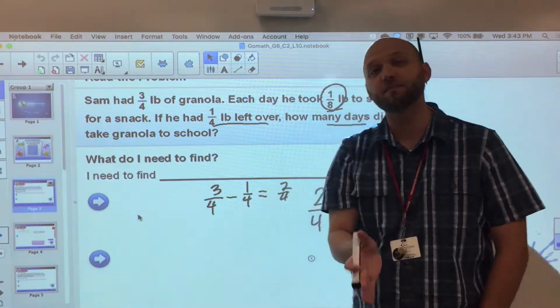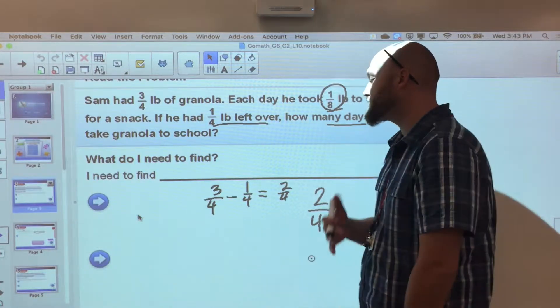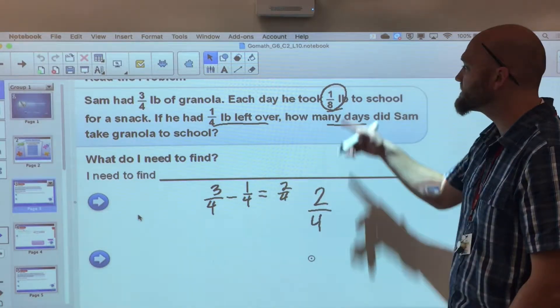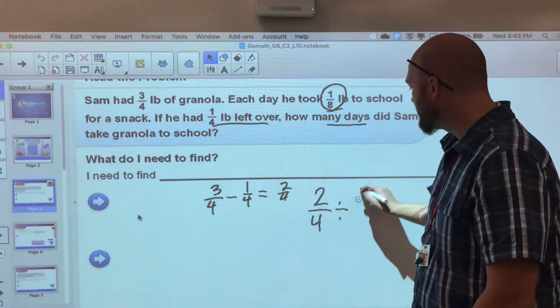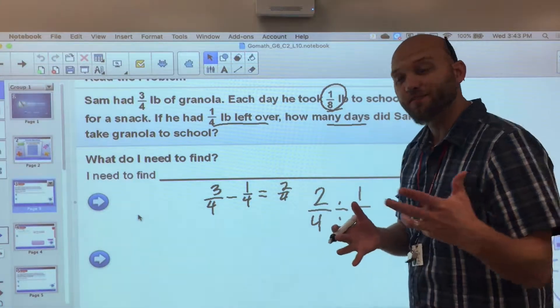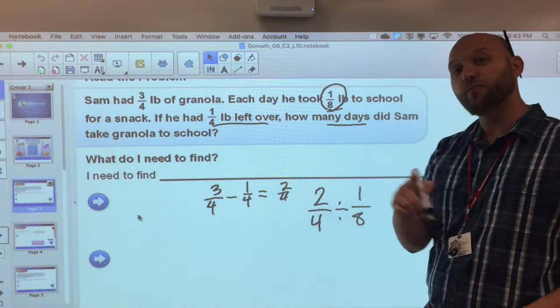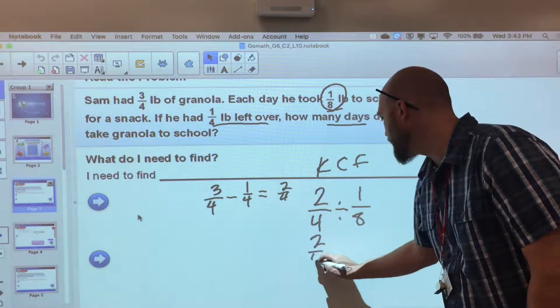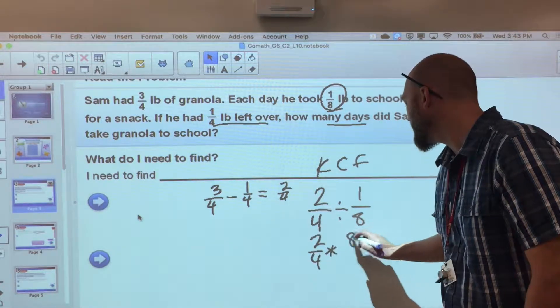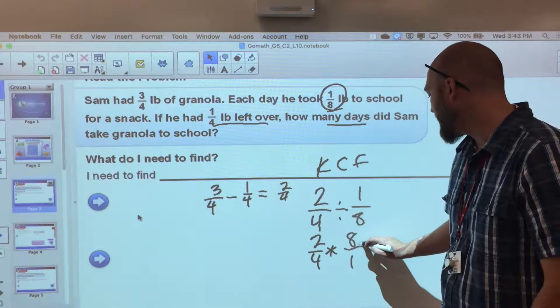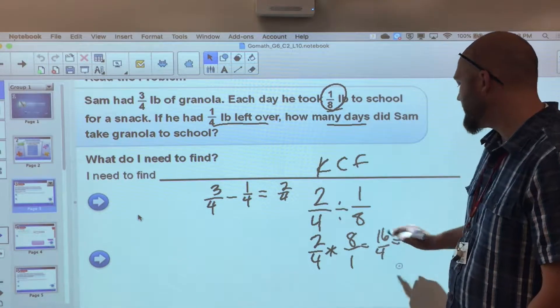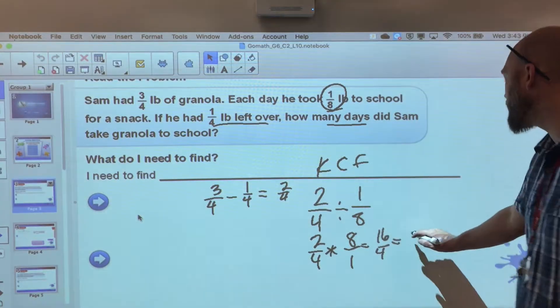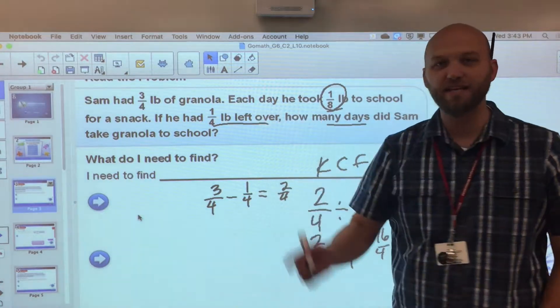I have two-fourths and I need to divide that into one-eighth pieces. Well, this gets back to a problem we easily know how to solve. I'm gonna keep it, change it, flip it: two-fourths times eight over one, and I would get sixteen-fourths. Sixteen divided by four—because every fraction is a division problem—sixteen divided by four gives me four. So how many days did he take granola to school? He took it four days.